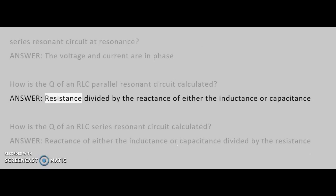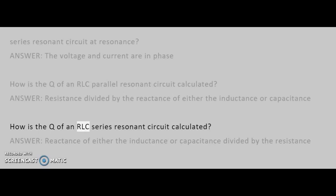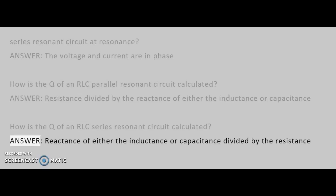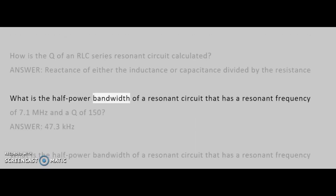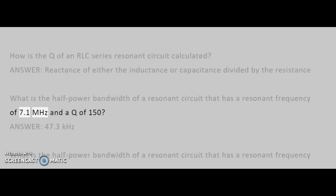How is the Q of an RLC parallel resonant circuit calculated? Answer: Resistance divided by the reactance of either the inductance or capacitance. How is the Q of an RLC series resonant circuit calculated? Answer: Reactance of either the inductance or capacitance divided by the resistance. What is the half-power bandwidth of a resonant circuit with a resonant frequency of 7.1 MHz and a Q of 150? Answer: 47.3 kHz.